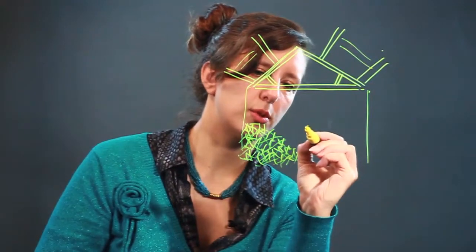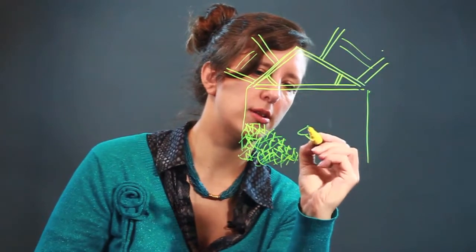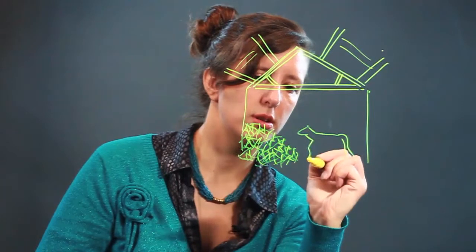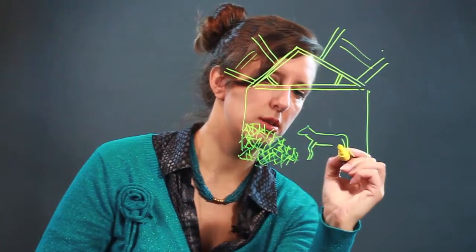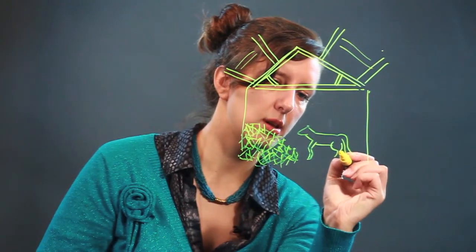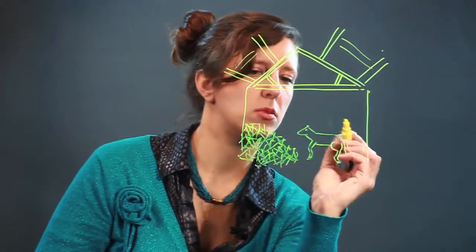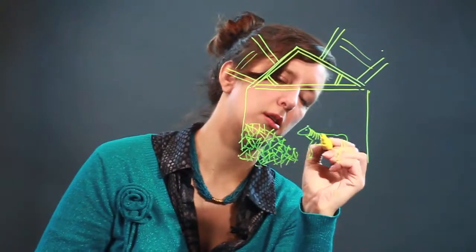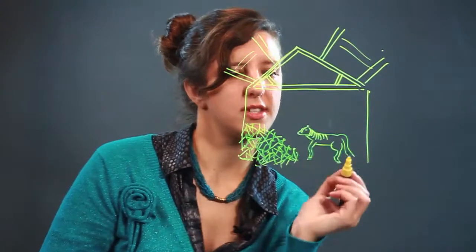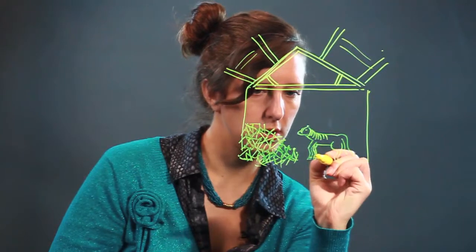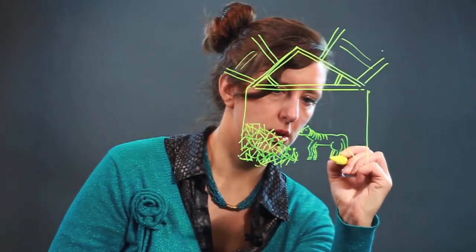And then we'll do a little horse who's hanging out in his barn. And he's a pretty happy horse. His hair, he's got hair on his face too. He's got four legs, of course, like so.